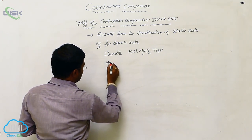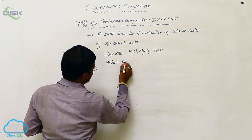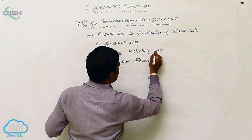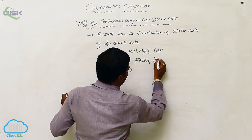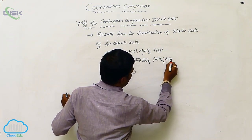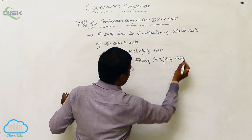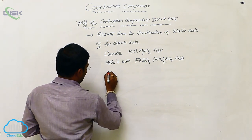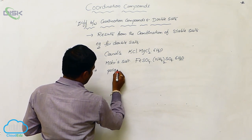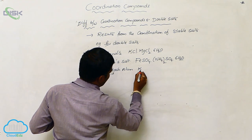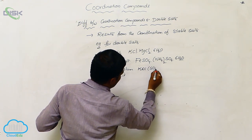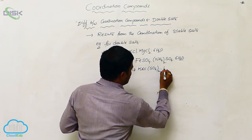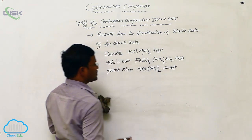Similarly, Mohr's salt has the formula FeSO₄·(NH₄)₂SO₄·6H₂O, which is also an example of a double salt. Another example is potassium alum, also called potash alum, with formula KAl(SO₄)₂·12H₂O. These are all examples of double salts.